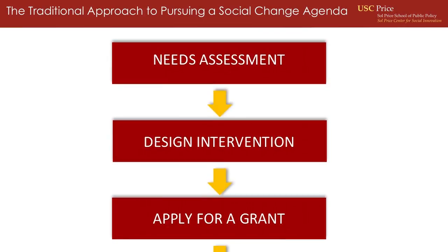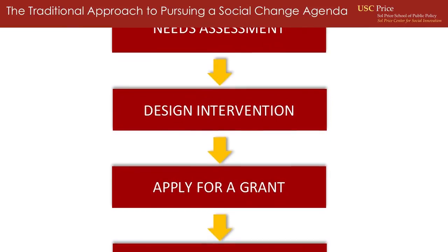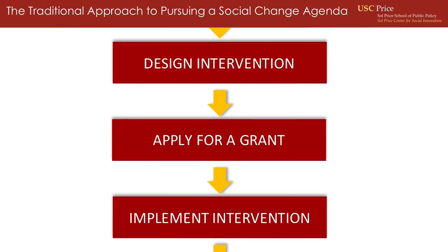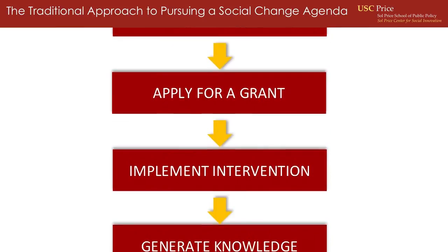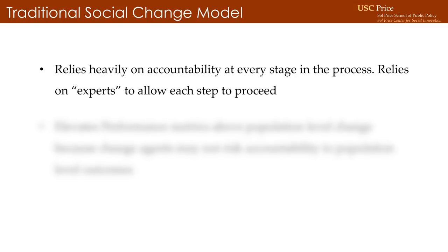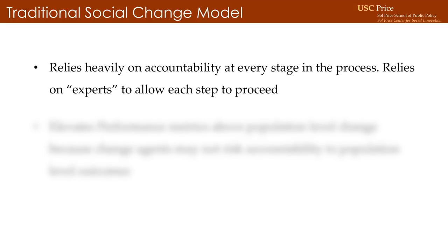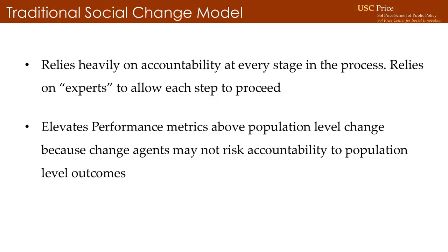There's a traditional approach to a social change agenda, and you want to track it because it matters. Evidence matters. After three years, maybe after five years, you tell the world we have learned something. But this particular model requires experts at each step in the process to allow it to proceed because there's a lot of risk. But did we solve the problem?